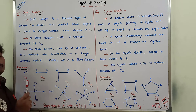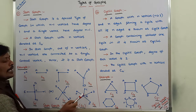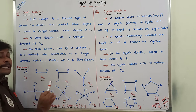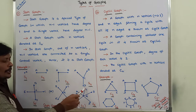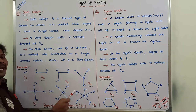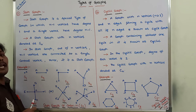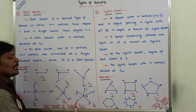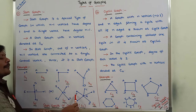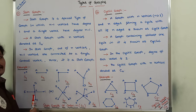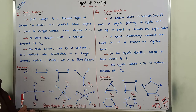A single central vertex has degree n minus 1. Vertex A is the single central vertex. Counting edges incident on vertex A: 1, 2, 3, 4, 5 edges. So degree of vertex A is 5, which equals 6 minus 1, that is n minus 1. A single central vertex has degree n minus 1 and n minus 1 vertices have degree 1. Hence S6 is a star graph.